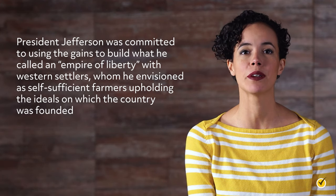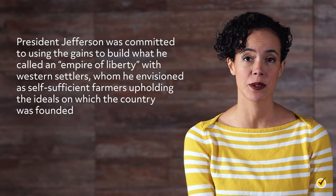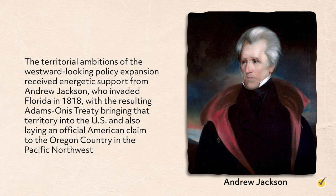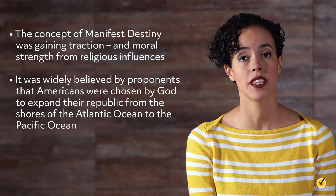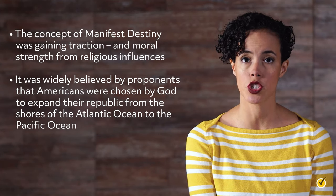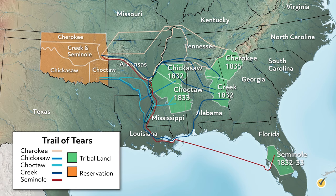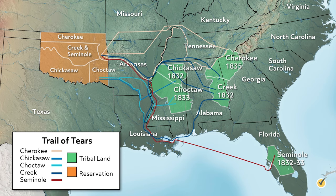President Jefferson was committed to using the gains to build what he called an empire of liberty with western settlers, whom he envisioned as self-sufficient farmers upholding the ideals on which the country was founded. Andrew Jackson gave energetic support to westward expansion — he invaded Florida in 1818, with the resulting Adams-Onís Treaty bringing that territory into the U.S. and laying an official American claim to the Oregon country in the Pacific Northwest. The concept of Manifest Destiny was gaining moral strength from religious influences: it was widely believed that Americans were chosen by God to expand their republic from the Atlantic to the Pacific.